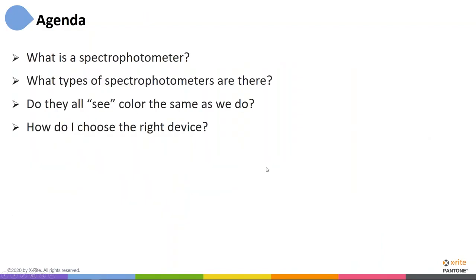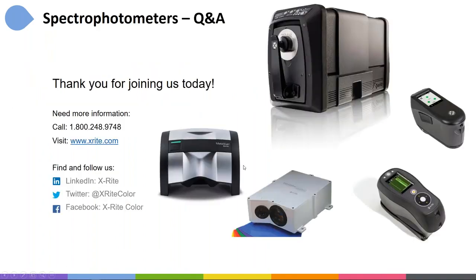That was our agenda. We went through what is a spectrophotometer, what types there are, how they see color, and the things to consider to choose the right device. With that, we'll move on to Q&A. I know we've used up most of our time, but we'll try and answer a couple of questions here. You can access other webinars we've done in the past where we cover topics like specular included, specular excluded, and those kinds of items. So let's go to questions, Robert.